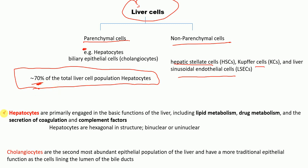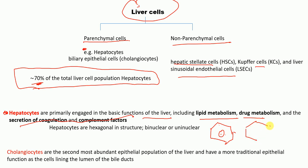Hepatocytes are primarily engaged in the basic functions of the liver, including lipid metabolism, drug metabolism, and secretion of coagulation and complement factors. Hepatocytes are mainly hexagonal in structure. Some hepatocytes are uninuclear, having only one nucleus, while others are binuclear, having two nuclei. Cholangiocytes are the second most evident epithelial cell population of the liver; these cells line the lumen of the bile ducts.